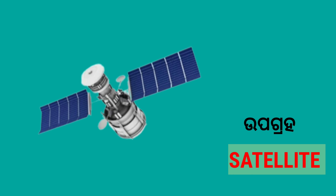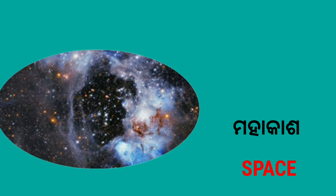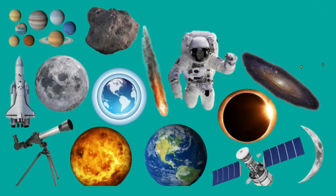Upagraha — in English we say Satellite. Mahakaso — in English we say Space. Mohakasochari — in English we say Astronaut.